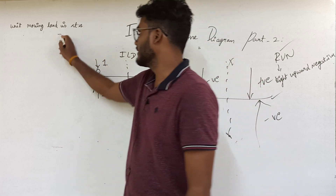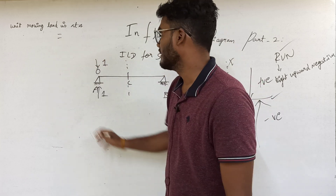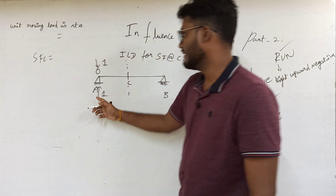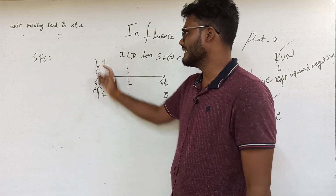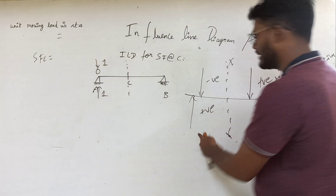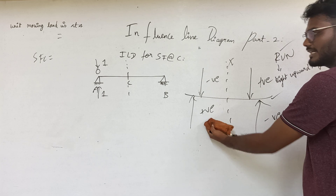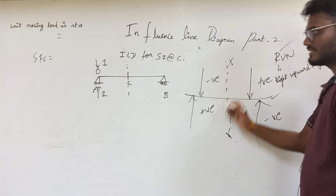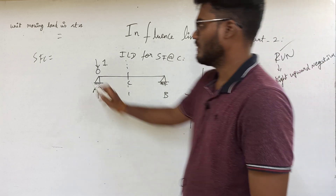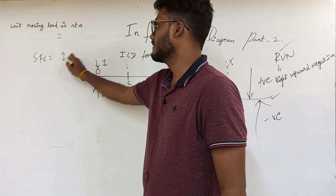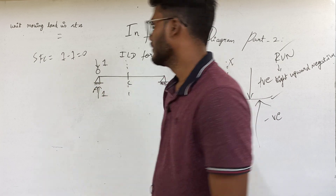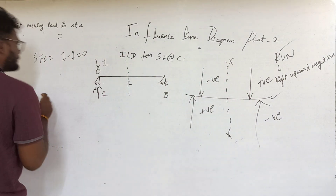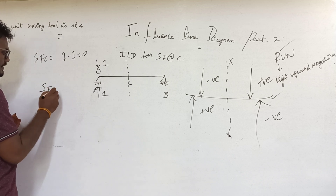When unit load is at A, the reaction of 1 is acting in the upward direction. So left side upward acts as positive. What is the shear force at C? Shear force at C is 0.